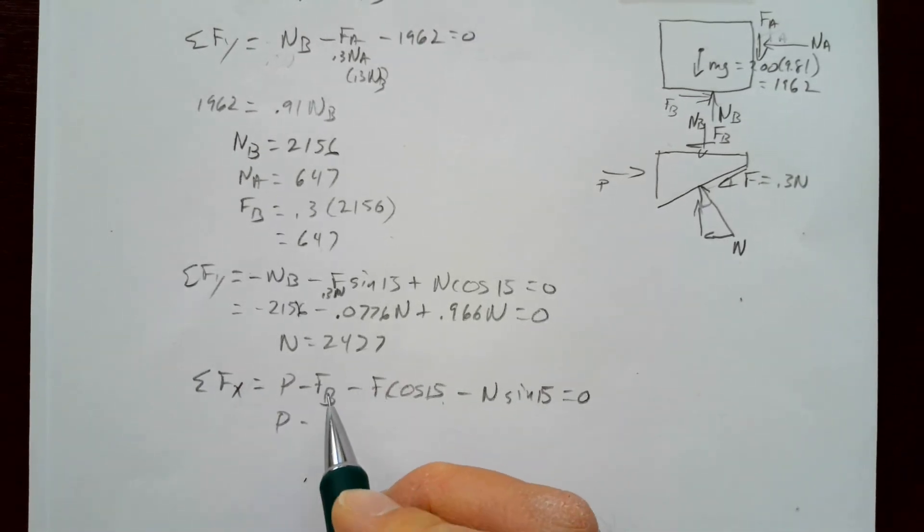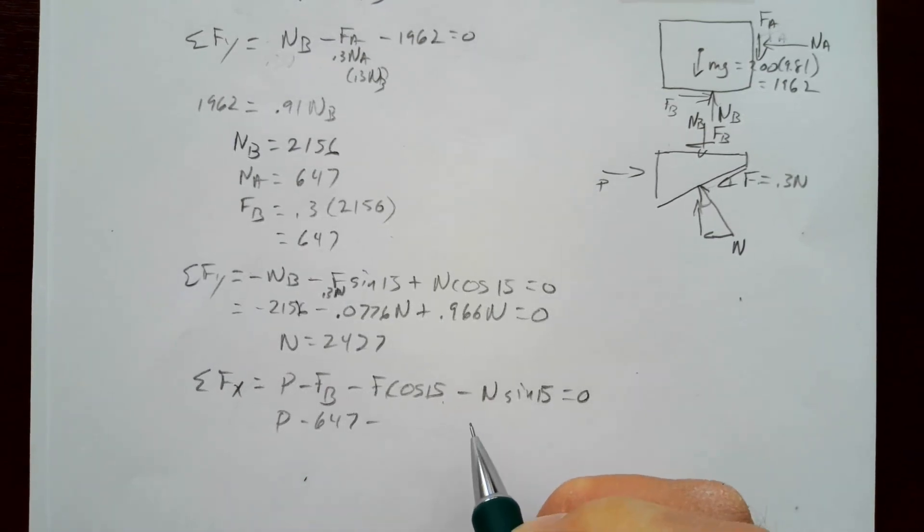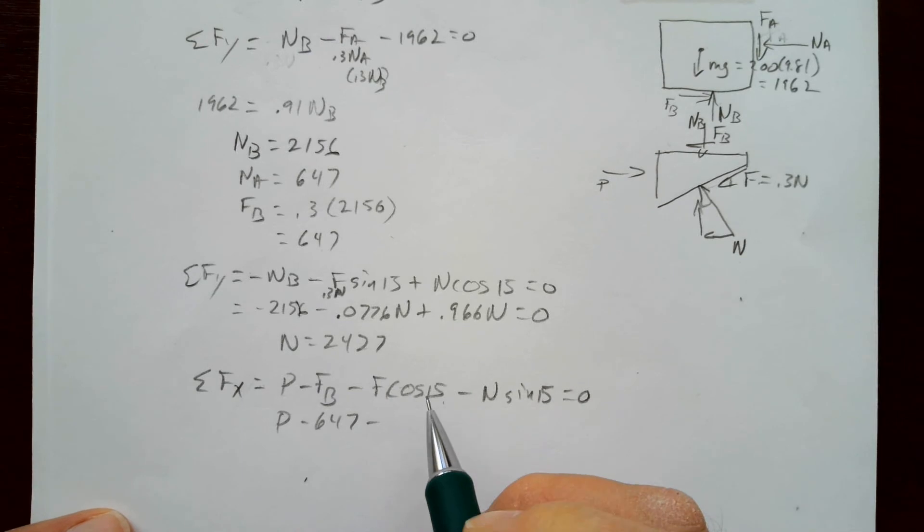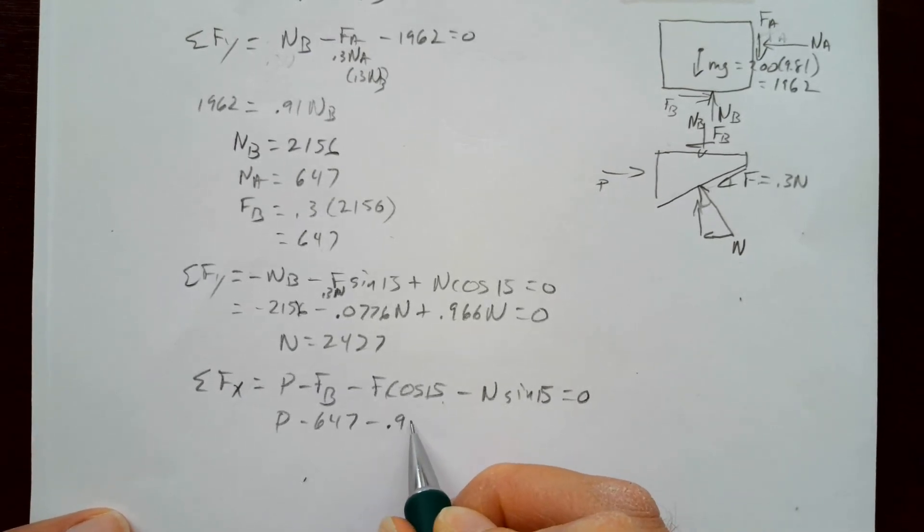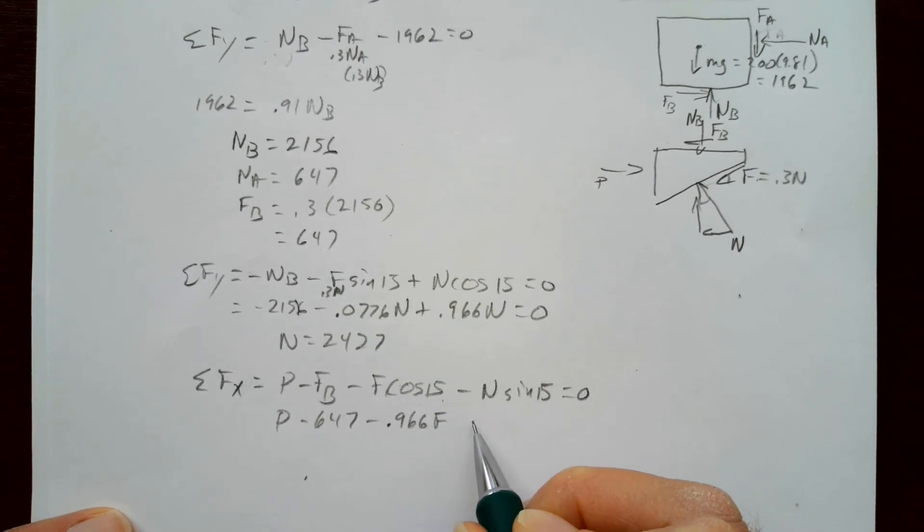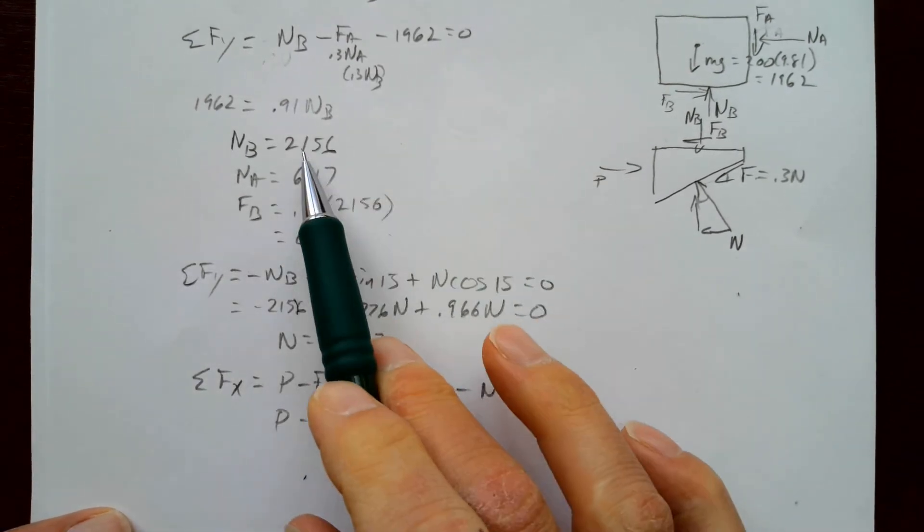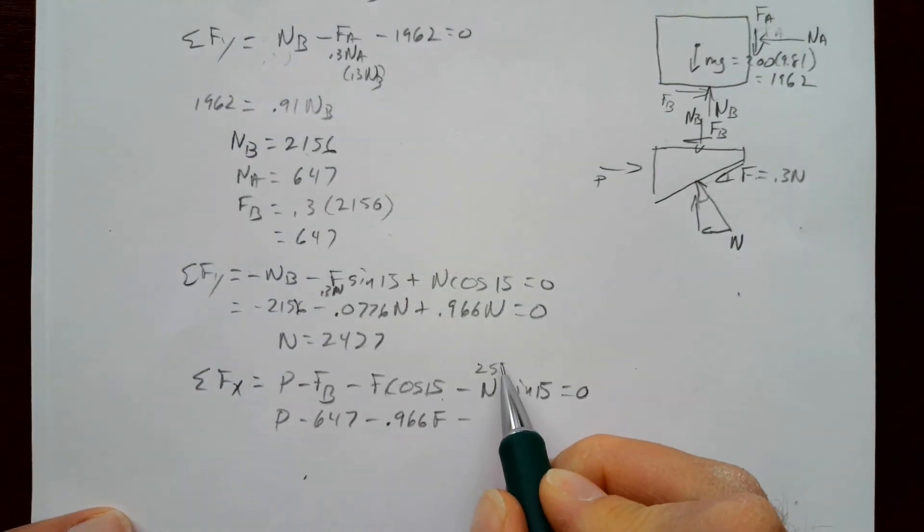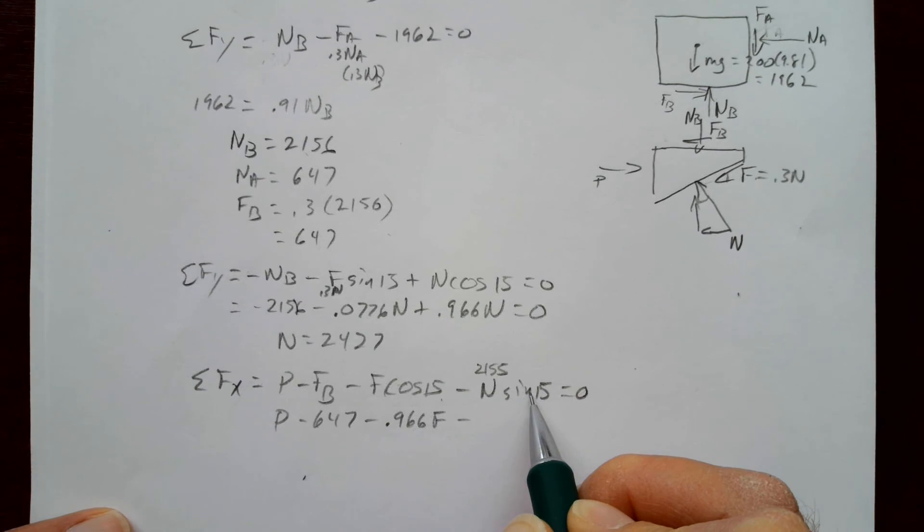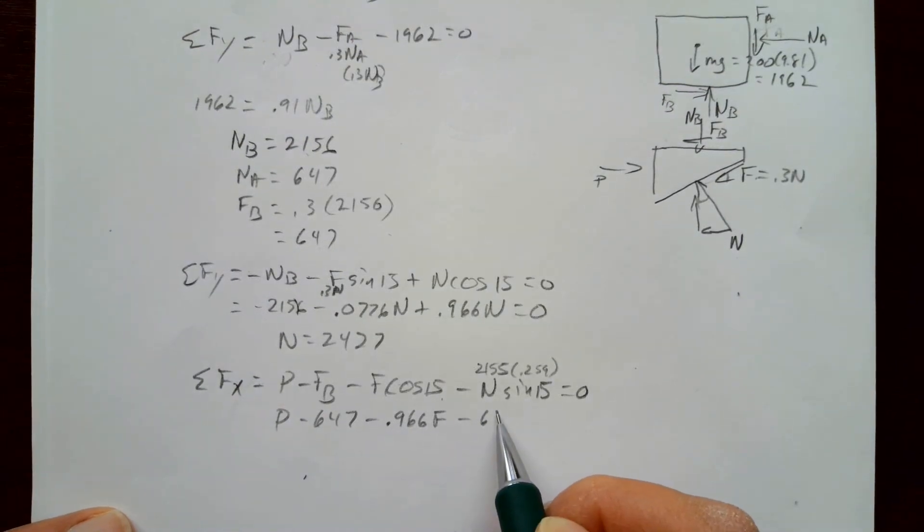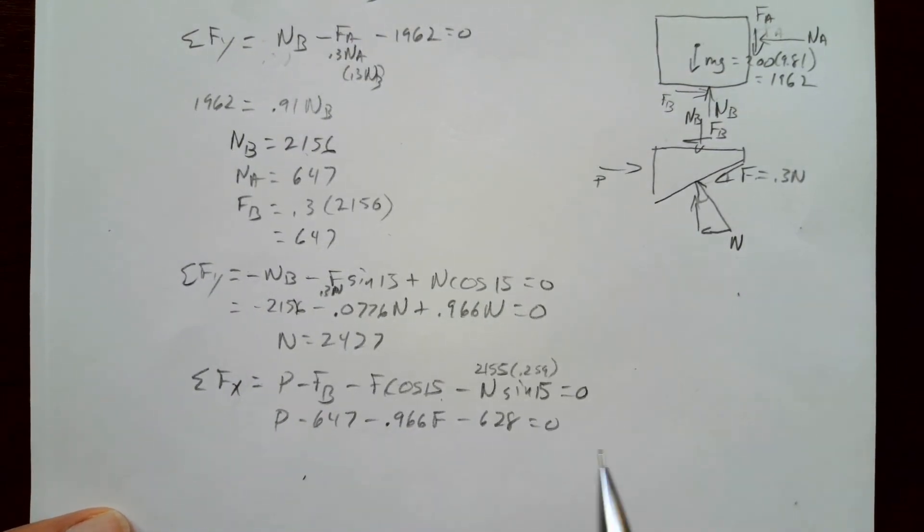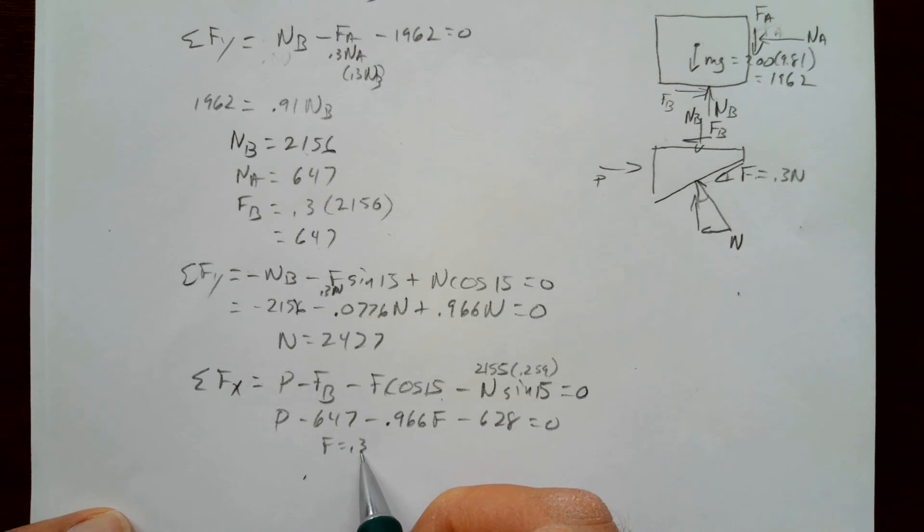So P, FB is 647. The cosine of 15 is 0.966 F. And N is 256. No, 2156. And then the cosine of 15 is 0.259. So that makes that 628. And that equals 0. And F equals 0.3N. So P, if we put that into there, P is equal to 1977.